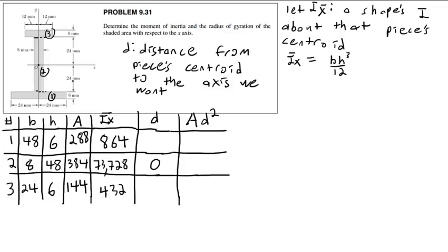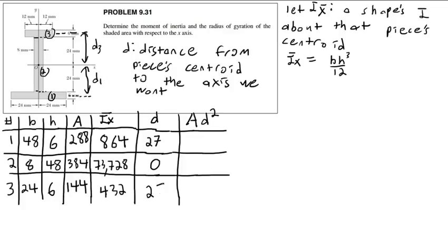For piece one, the distance is going to be 24 plus 3, so 27. I'm deliberately drawing this line in the middle of the piece to make clear that this is the distance from the centroid of this piece to the axis we want. This piece is 6 millimeters thick, so the distance from the x-axis to the centroid is 24 millimeters plus 3 millimeters, or 27. The same will be true for piece three: 24 plus 6 over 2, or 27.